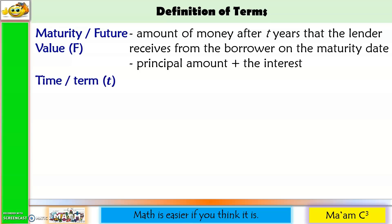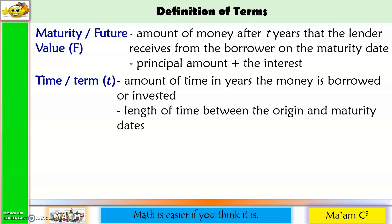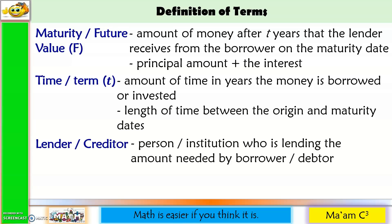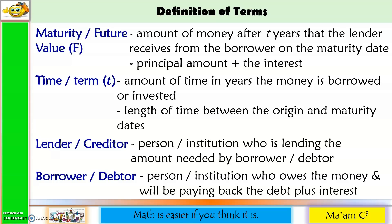Next is the time or term, denoted by small letter T. It is the amount of time in years the money is borrowed or invested. It is also the length of time between the origin and maturity dates. The lender or creditor is a person or institution lending the amount needed by the borrower or debtor, who owes the money and will be paying back the debt plus the interest.